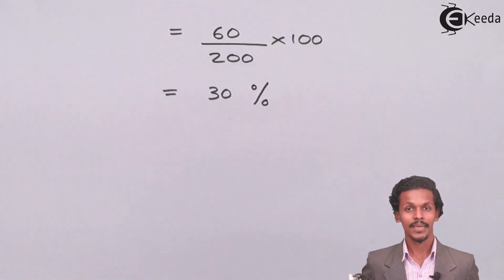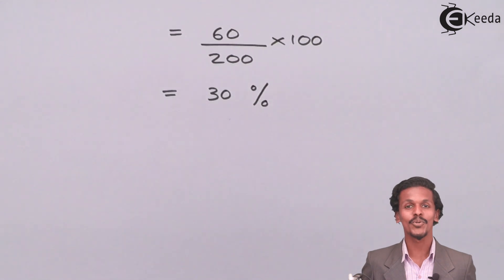The answer is 30 percent. The unit of this will be unitless. Why? Because it is a fraction of volume by volume, so there is no unit.